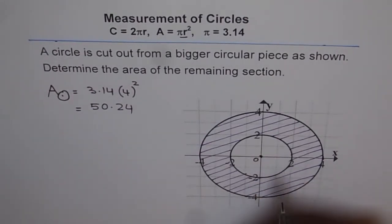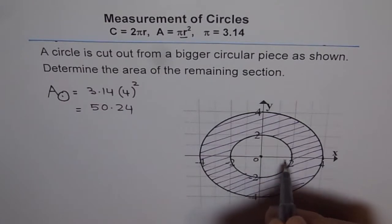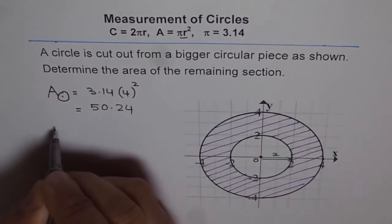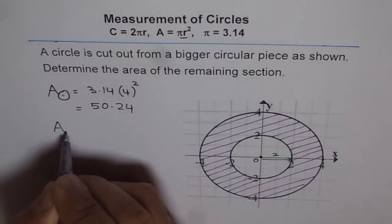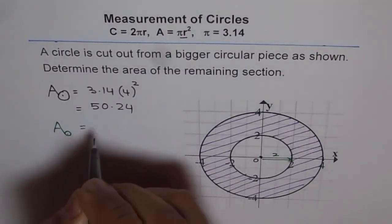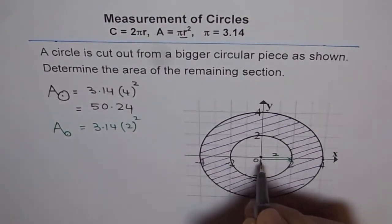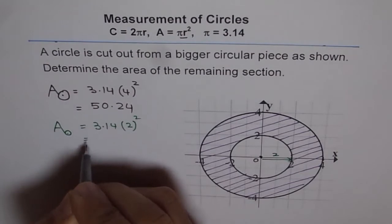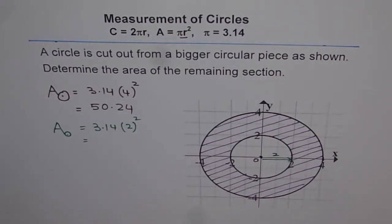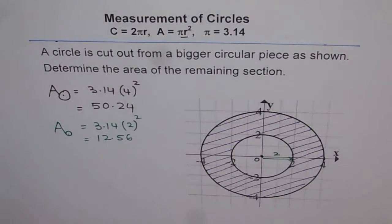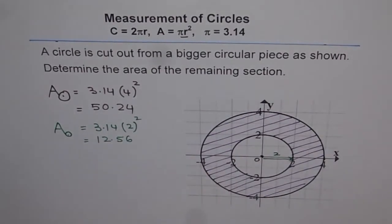Now let's find the area of the small circle. The small circle radius is 2 units — you can see from here to here it is 2 units. So the area of the small circle is equal to 3.14 times 2 squared. Since the radius is 2, that is 3.14 times 4, which equals 12.56. So we find the area of the small circle as 12.56.